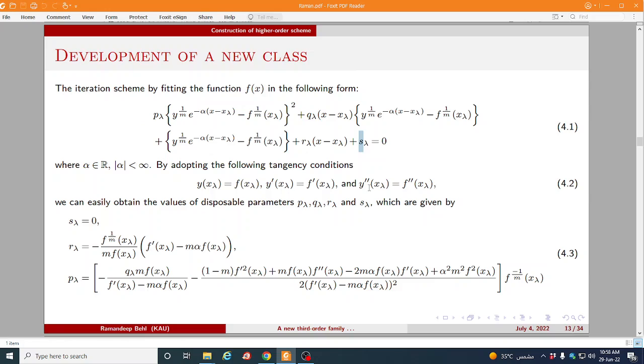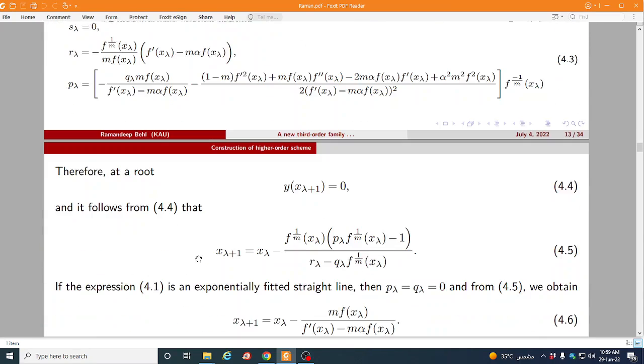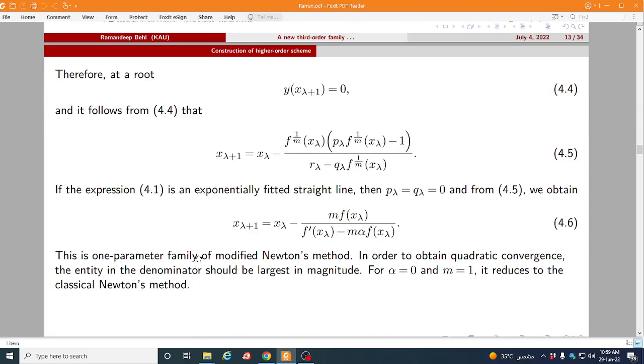The value of these disposable constant can be determined with the help of following tangency conditions. So clearly we have four disposable parameter and we have three tangency conditions, so obviously one parameter will be free here which is q(λ). We got these three values.